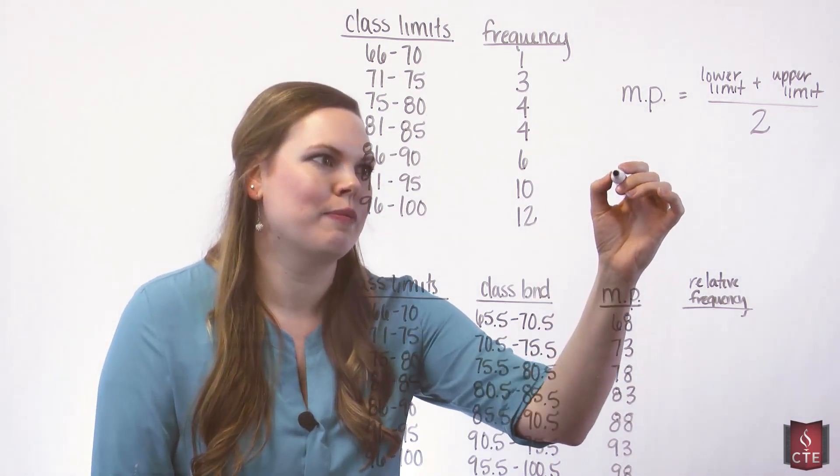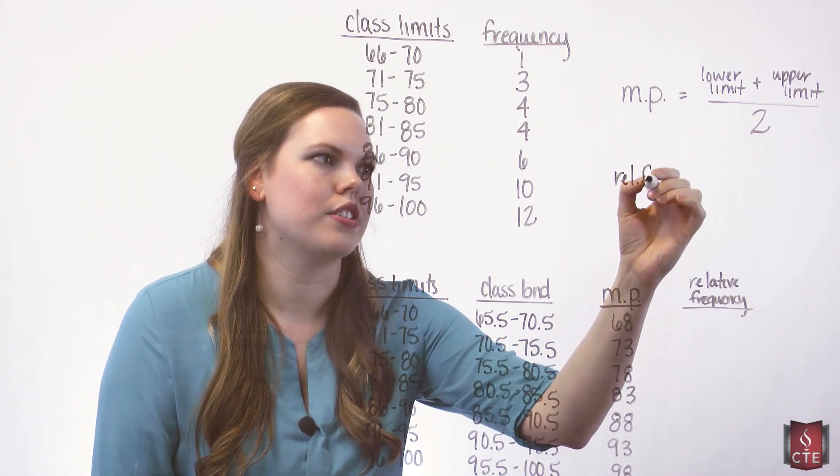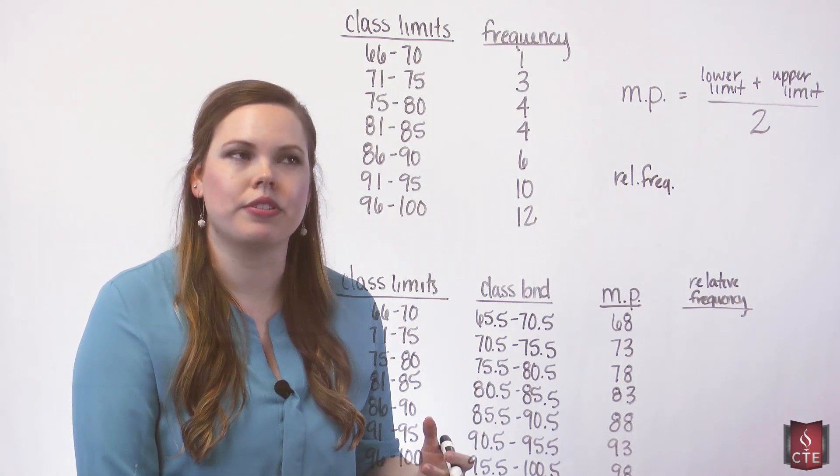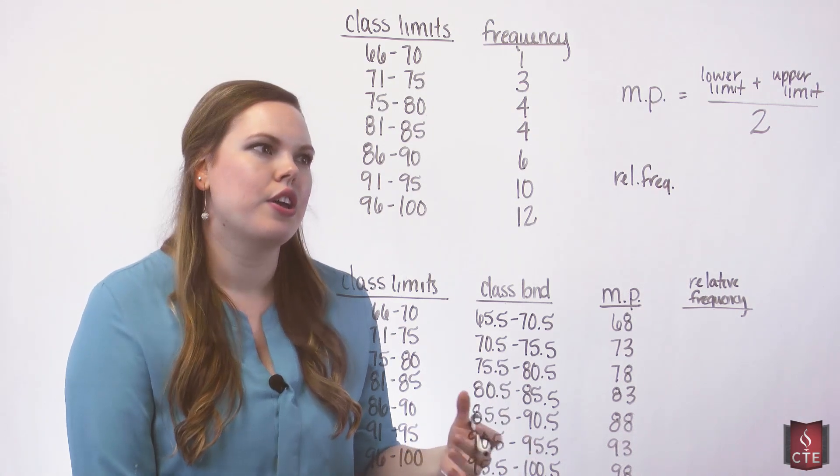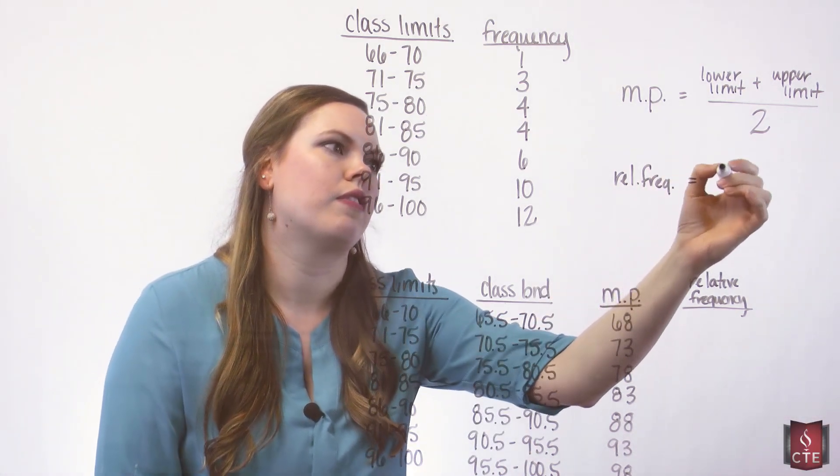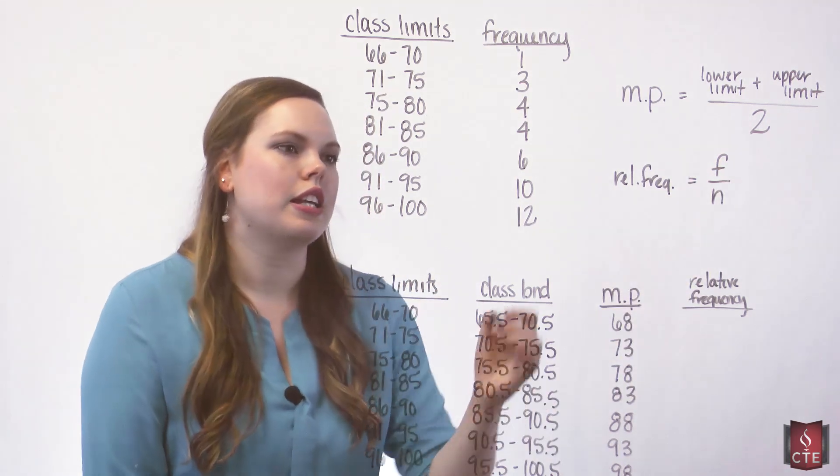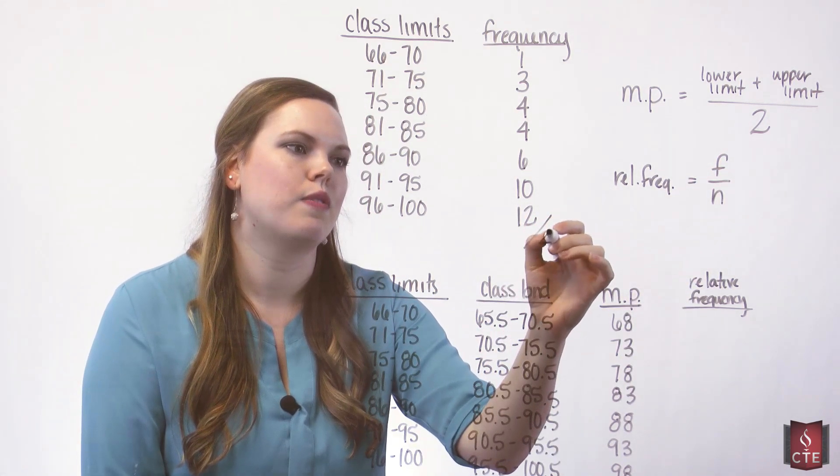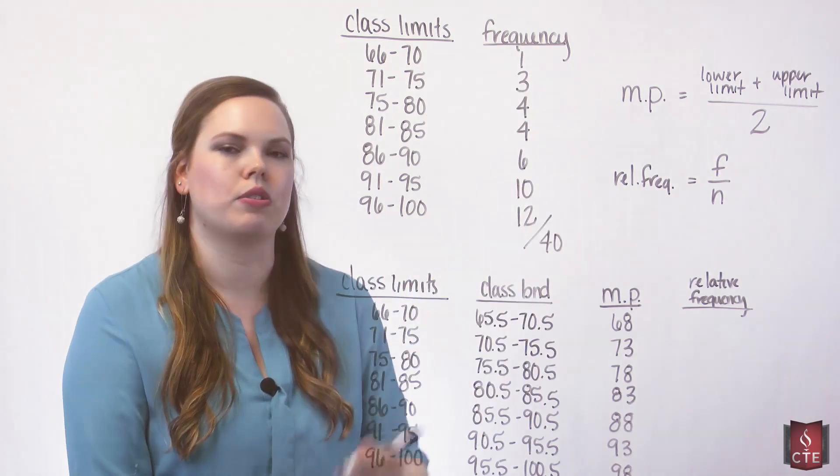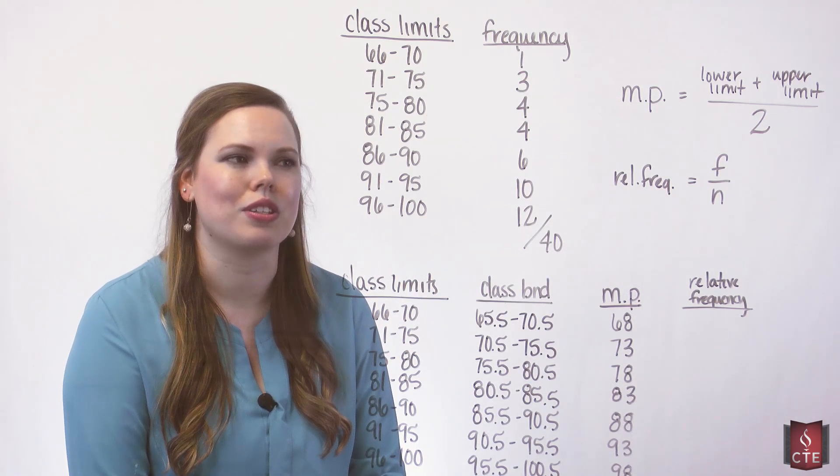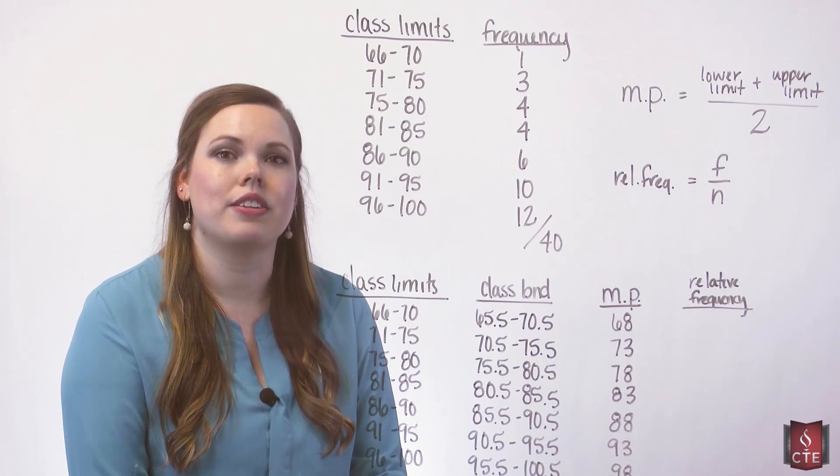The way you get a relative frequency is finding the percentage or the ratio of the amount of data in each class. So you simply take the frequency of that class and you divide it by your sample size. Our sample size is 40. If you add these up, you should get 40. That's the number of data values that we had when we did this frequency distribution. So that is our n.